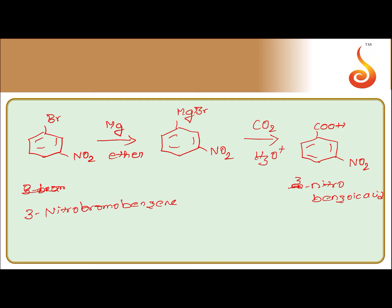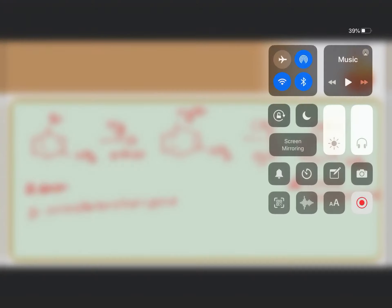So, what we have to do? First, treat with magnesium. Convert it into a Grignard's reagent. Treat the Grignard's reagent with carbon dioxide followed by hydrolysis.